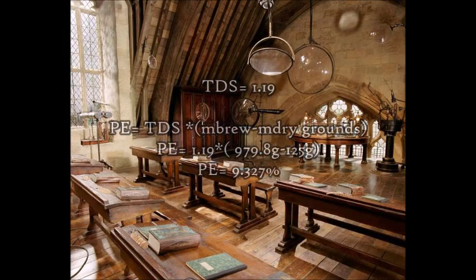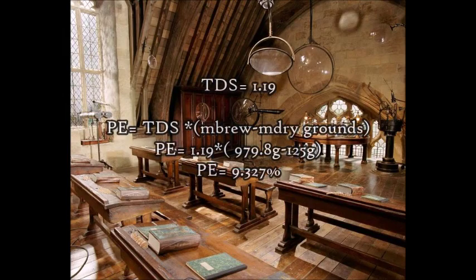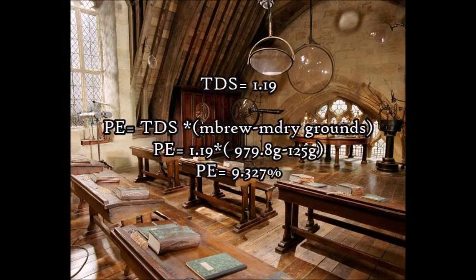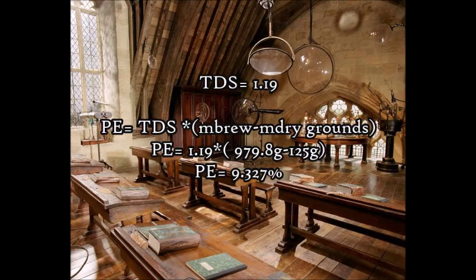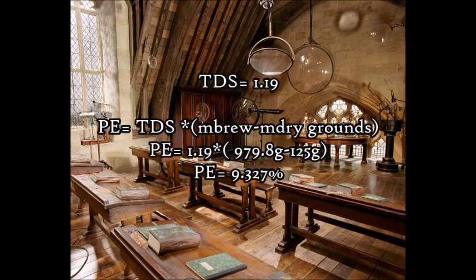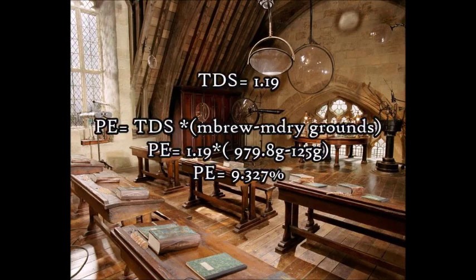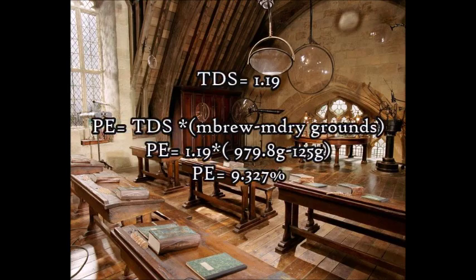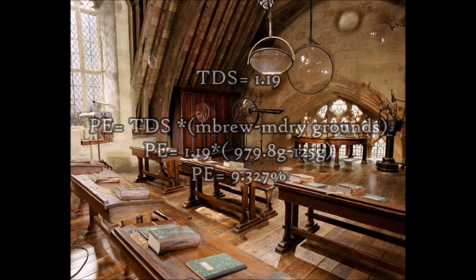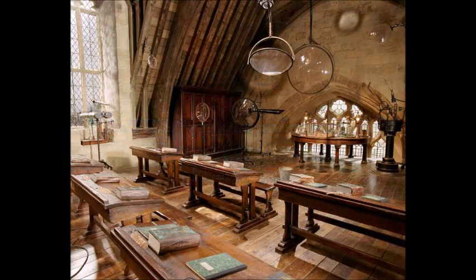The TDS of our brewed coffee was 1.19. To find our PE, we did PE equals TDS times N brew over N dry grounds.